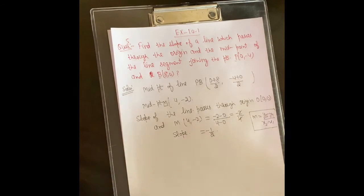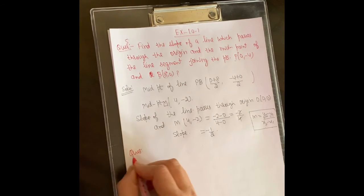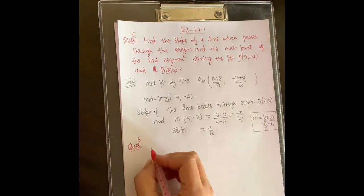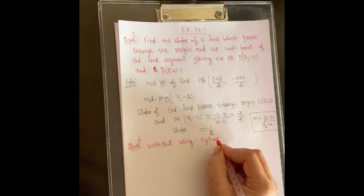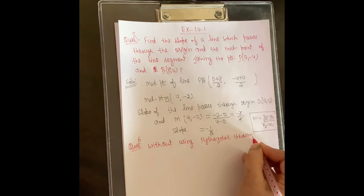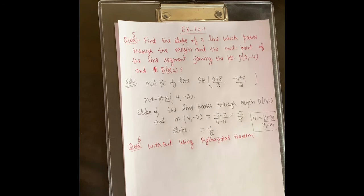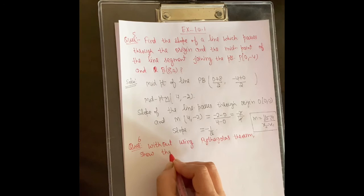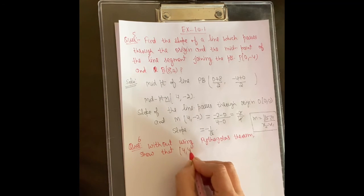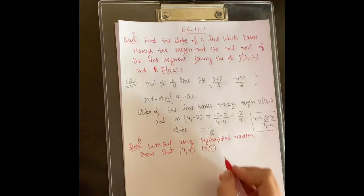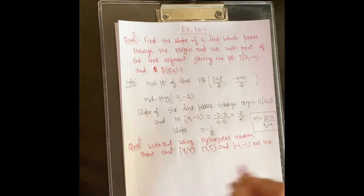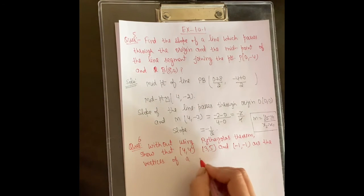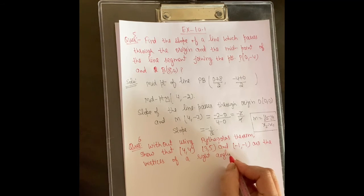Let's look at the next question on slope. Question 6 says: without using the Pythagoras theorem, show that the points (4, 4), (3, 5), and (−1, −1) are the vertices of a right-angled triangle.